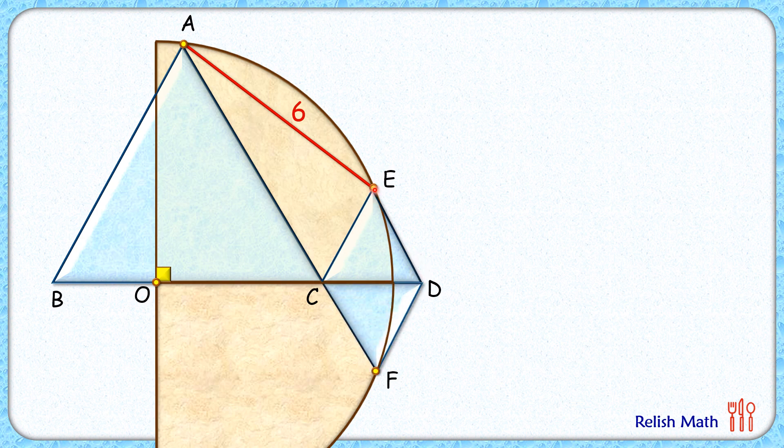Now from point E let's draw an altitude on side CD meeting at point F. Now here in this triangle CDF, this angle here is 60 degrees because it's an equilateral triangle, this is 90, and thus this angle here is 30 degrees.